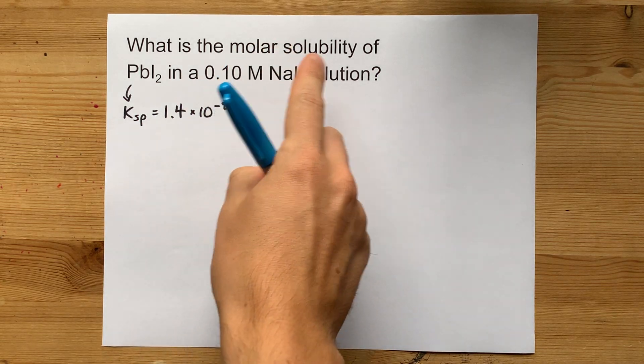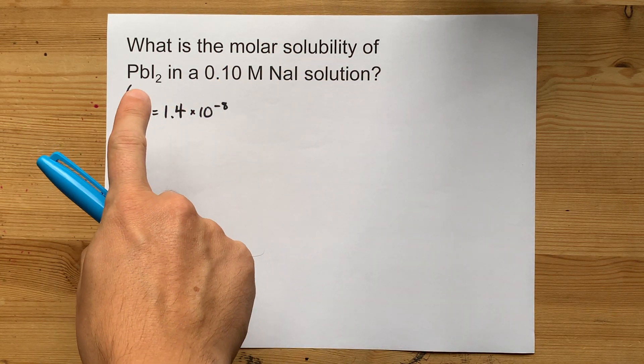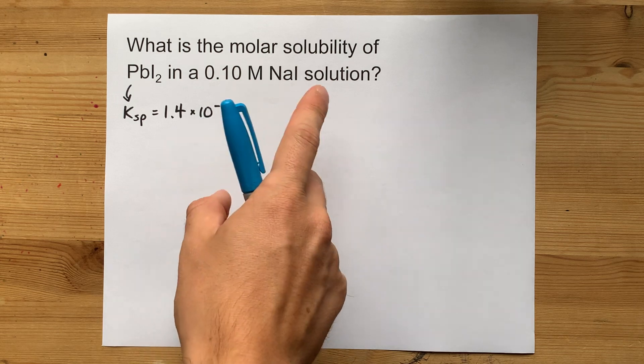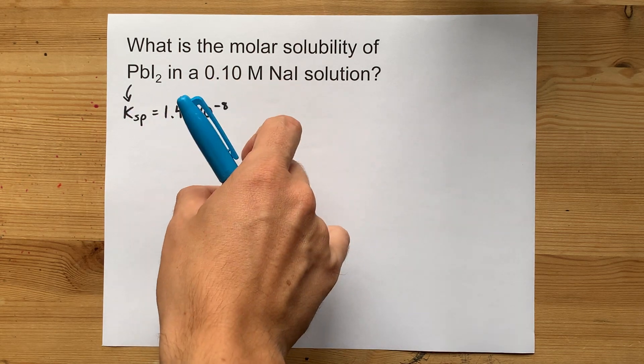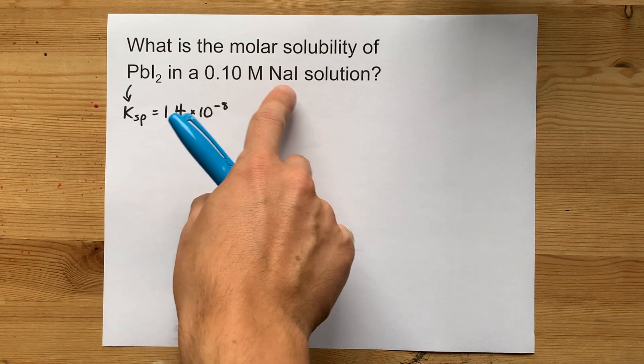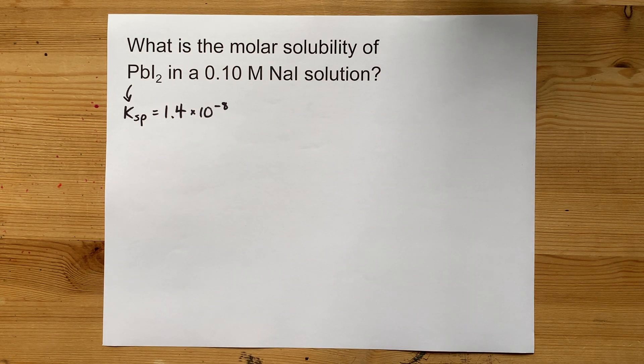Let's calculate the molar solubility of lead iodide in a solution that already contains some iodide. In fact, 0.1 moles per liter of iodide ions.